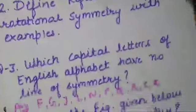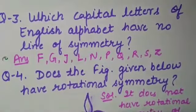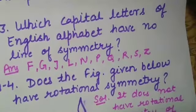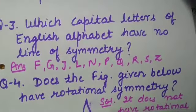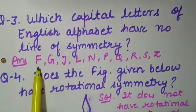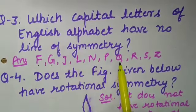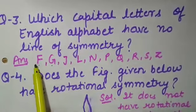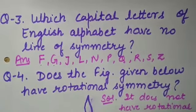Now come to question number 3: which capital letters of the English alphabet have no line of symmetry? We have to find all the capital letters that have no lines of symmetry. These are the letters: F, G, J, L, N, P, Q, R, S, and Z. These letters do not have any line of symmetry. That is question number 3.